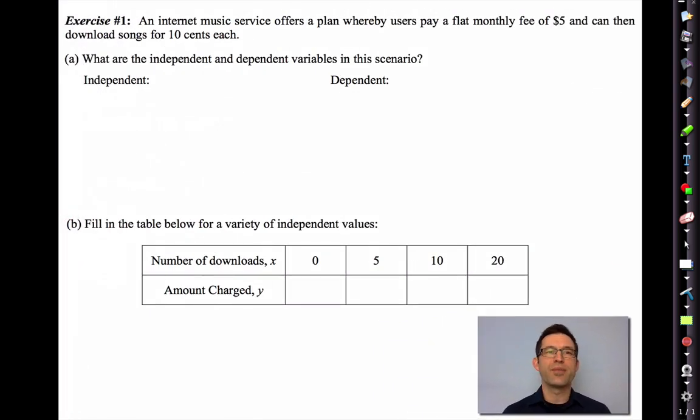So let's jump right into a real world scenario where we have a function. Exercise one. An internet music service offers a plan whereby users pay a flat monthly fee of $5 and then can download songs for 10 cents each. Sounds like a good deal.